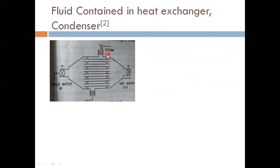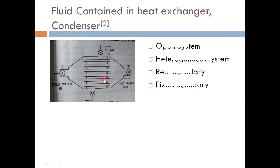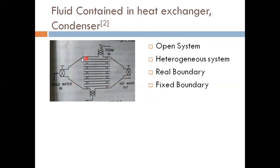Next example: a heat exchanger, where steam enters and converts to water while cold water is heated to become hot water. This is an open system because mass is entering and leaving. It is a heterogeneous system because there are two phases — steam and cold water. The boundary is a real boundary because the surface is real, and a fixed boundary because the shape and size do not change.